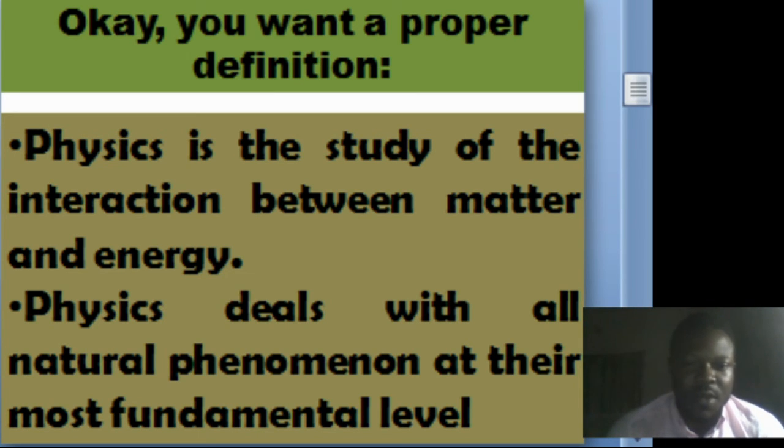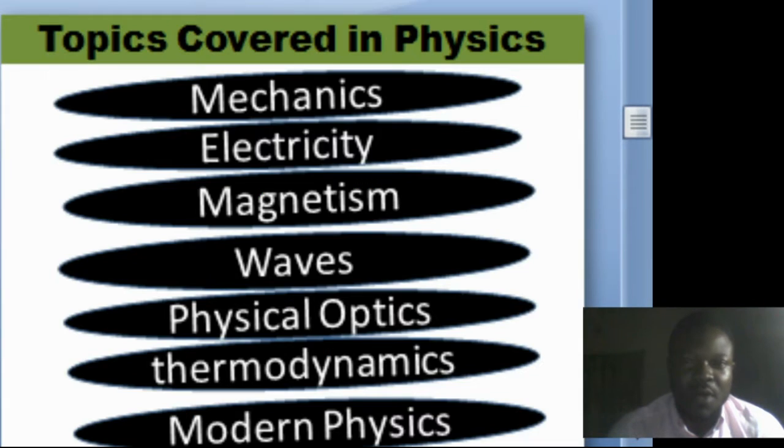In physics, we divide the branches and topics we are going to be covering into seven major parts. The first six are called the classical physics that were studied before 1900, while the last one, modern physics, was studied after 1900. We have mechanics, electricity, magnetism, waves, physical optics, thermodynamics, and modern physics.